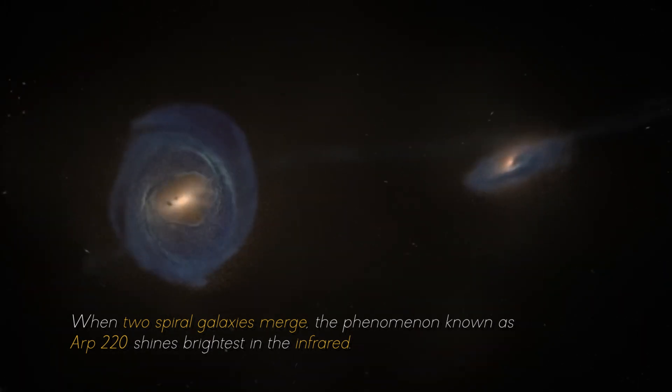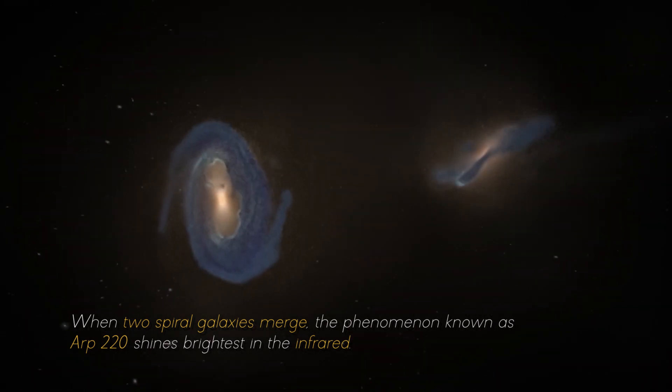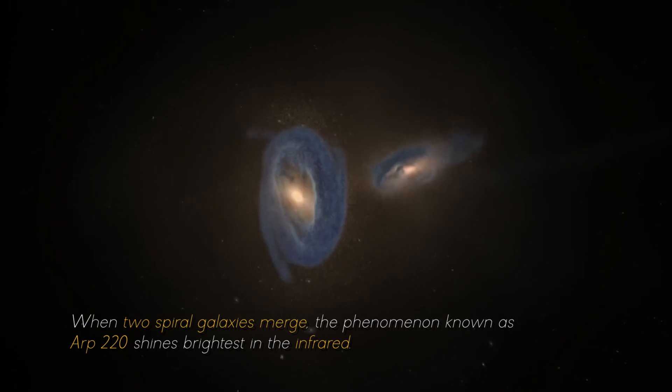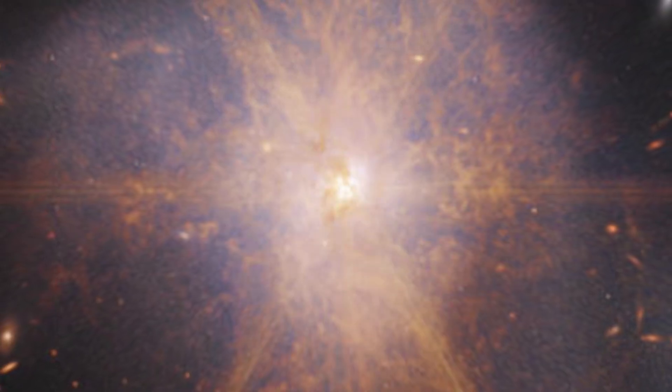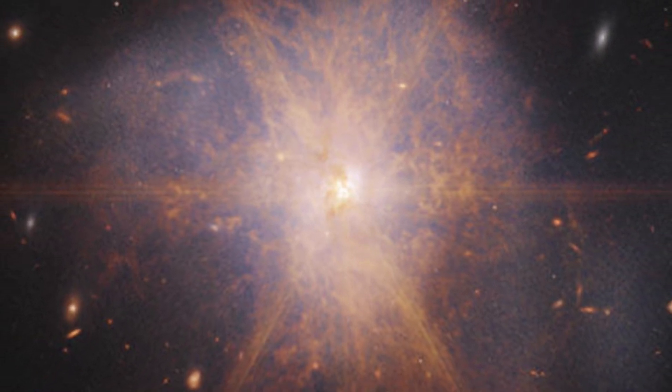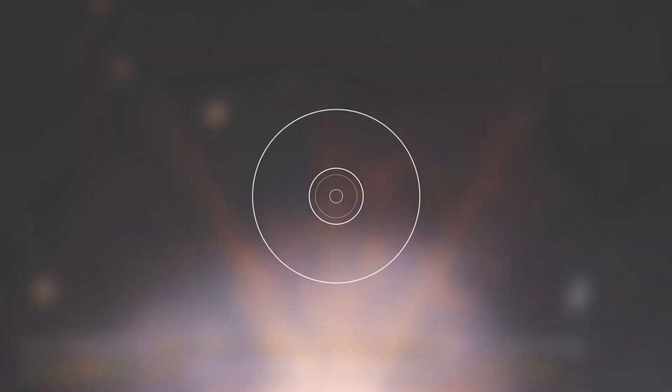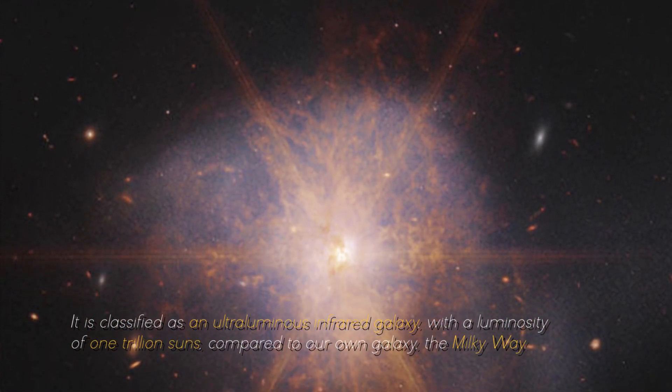When two spiral galaxies merge, the phenomenon known as ARP 220 shines the brightest in the infrared, making it perfect for observation by the James Webb Space Telescope. It is classified as an ultra-luminous infrared galaxy.